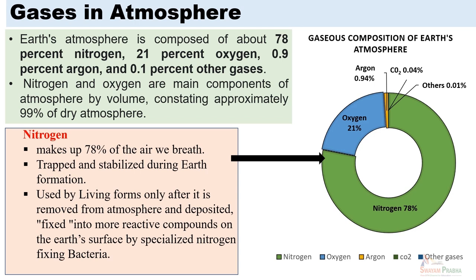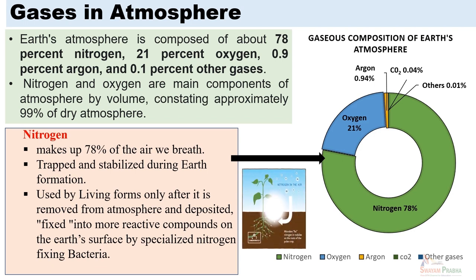Over several billion years as the earth's atmosphere stabilized, nitrogen molecules also stabilized, forming up to 78% of the atmosphere. Nitrogen is used by living forms only after it is removed from the atmosphere and fixed into more reactive compounds on the earth's surface by specialized nitrogen-fixing bacteria, which are found on the roots of plants. These bacteria help convert nitrogen into more readily usable compounds; otherwise it remains non-reactive and non-usable.